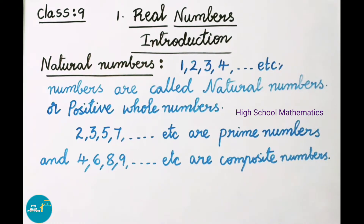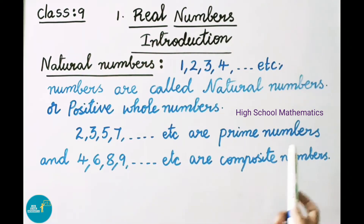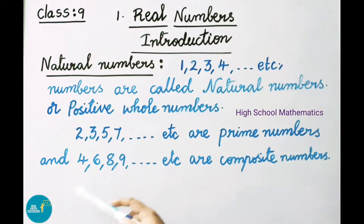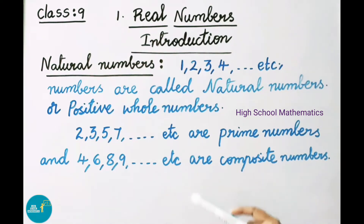Next, let us see what is a composite number. The numbers which are having more than 2 factors are called as composite numbers. See here: 4, 6, 8, 9, etc. — all these are composite numbers.